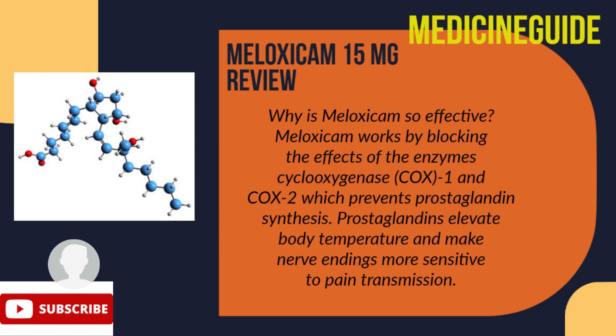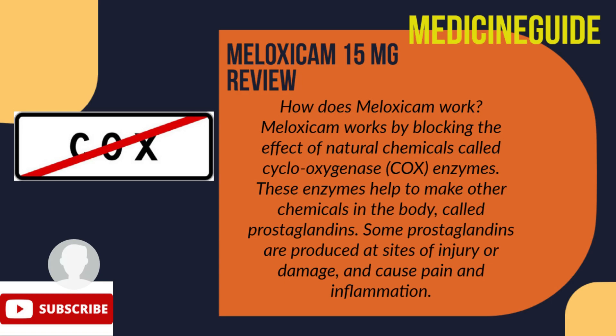Why is meloxicam so effective? Meloxicam works by blocking the effects of the enzymes cyclooxygenase COX-1 and COX-2, which prevents prostaglandin synthesis. Prostaglandins elevate body temperature and make nerve endings more sensitive to pain transmission. These enzymes help make chemicals called prostaglandins, which are produced at sites of injury or damage and cause pain and inflammation.